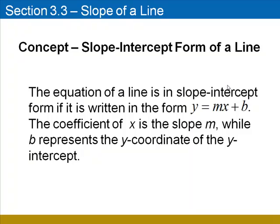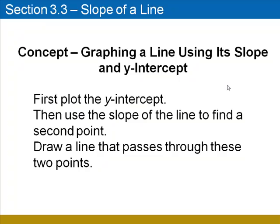The slope-intercept form of a line. The equation of a line is in slope-intercept form if it's written in the form y equals mx plus b, where y is isolated on one side of the equation. The coefficient of the x-term is the slope, m, while b represents the y-coordinate of the y-intercept, (0, b). To graph a line using its slope and y-intercept, we first plot the y-intercept, then we use the slope of the line to find a second point. We finish by drawing a line that passes through these two points.